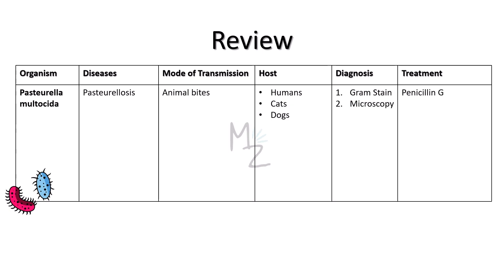Let's have a quick recap. The organism we discussed today is Pasteurella multocida. It is responsible for causing pasteurellosis. It is transmitted by animal bites. Hosts include humans, cats, and dogs. Diagnosis is based on gram staining and microscopy. For treatment, Penicillin G is the drug of choice. I hope you enjoyed the video and learned about Pasteurella multocida in detail.